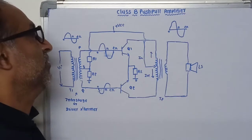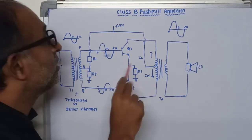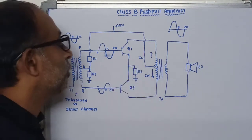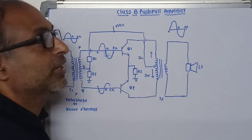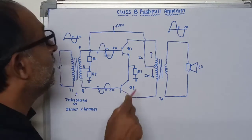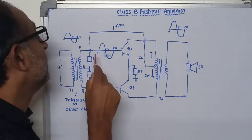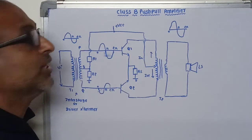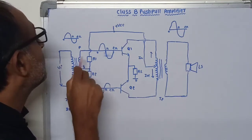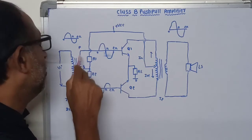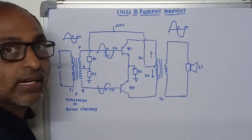Now, the Class B push-pull amplifier. In the circuit of Class B push-pull amplifier, it consists of two similar power transistors Q1 and Q2. Here, we are taking common emitter type power transistors. The base of each power transistor Q1 and Q2 is connected to the secondary winding of the transformer T1. The P terminal of the secondary winding of transformer T1 is connected to the base of transistor Q1.